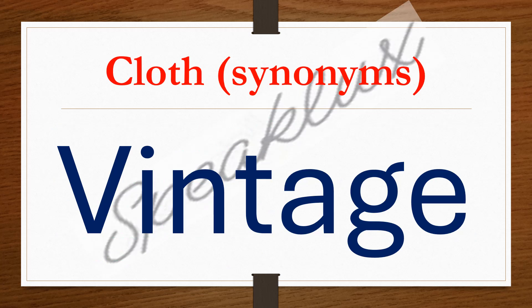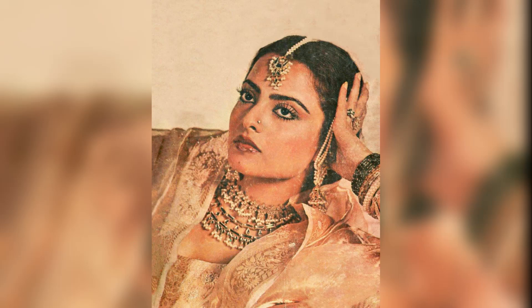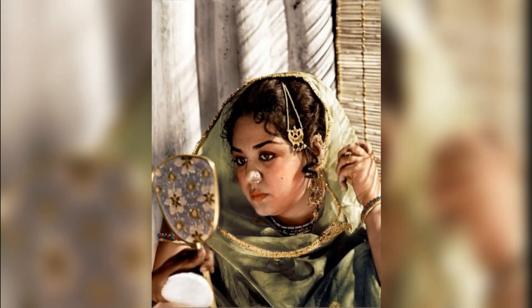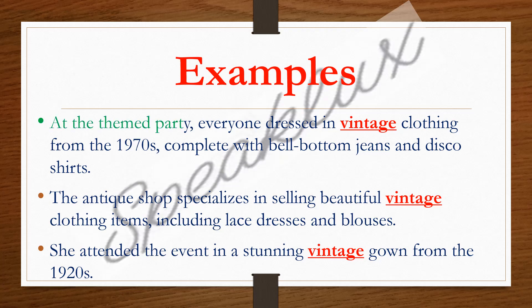Last but not the least is vintage. Vintage refers to old-fashioned clothes related to special times in the past. Vintage clothes remind us of a unique style from the past, so whenever you see old-fashioned clothes, you can call them vintage. For example: at the themed party, everyone dressed in vintage clothing from the 1970s, complete with bell-bottom jeans and disco shirts. The antique shop specializes in selling beautiful vintage clothing items including lace dresses and blouses. She attended the event in a stunning vintage gown from 1920.